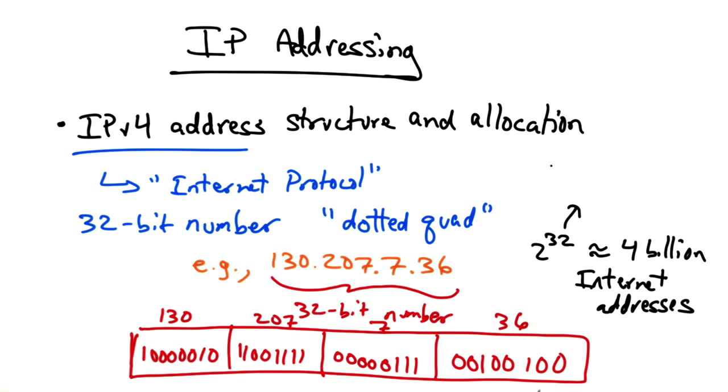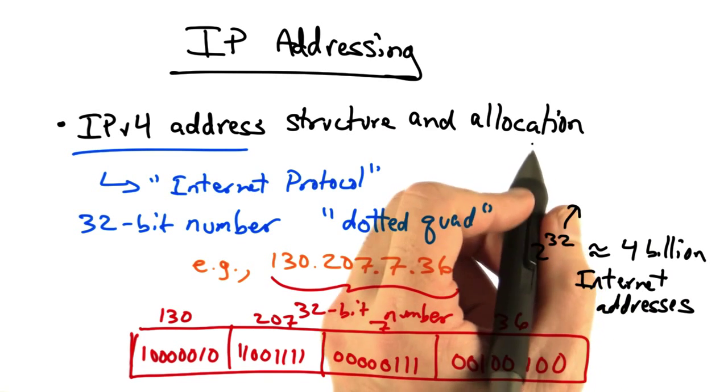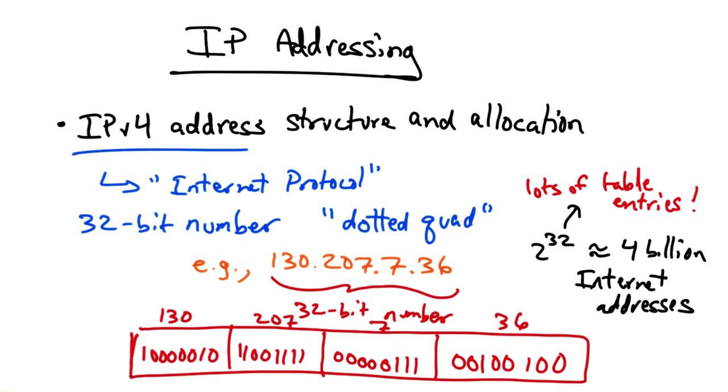But even if we only had to deal with 2 to the 32 Internet addresses, that's still a lot. Think of if you have to store every single IP address as an entry in a table. Very quickly, that becomes an extremely large table,